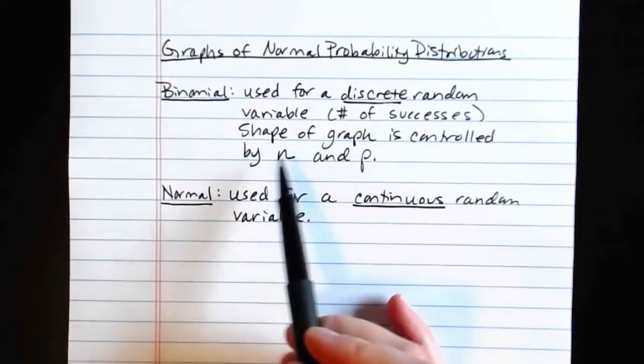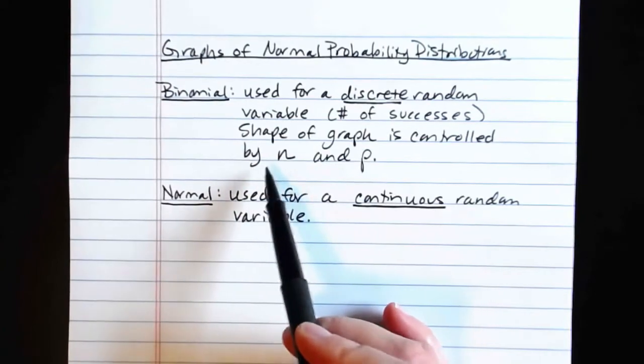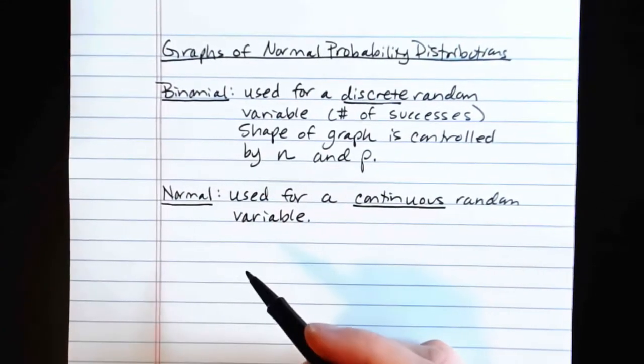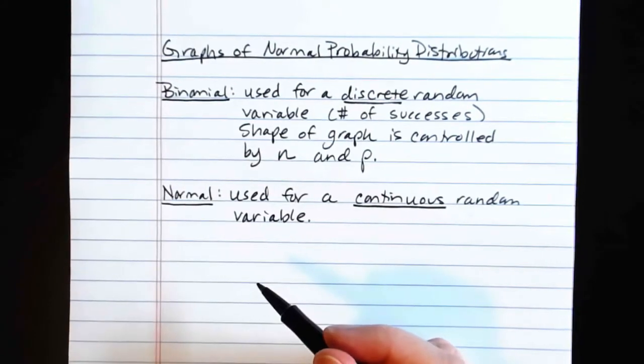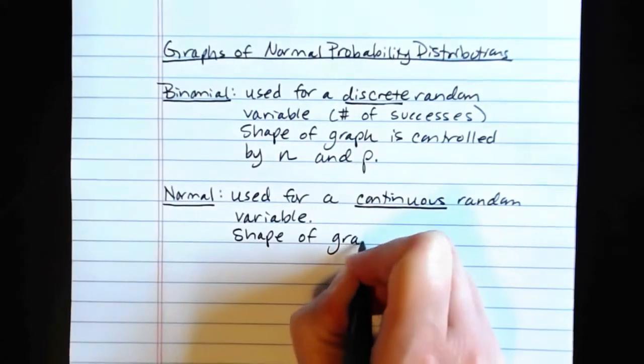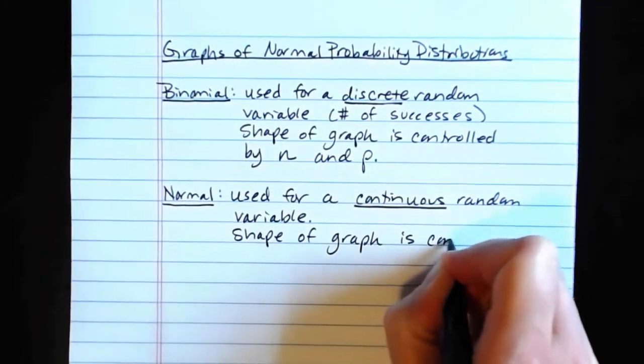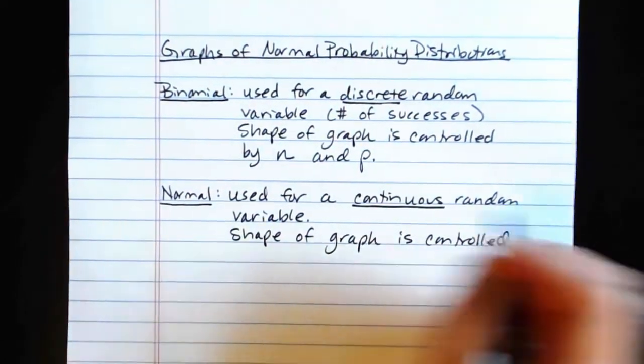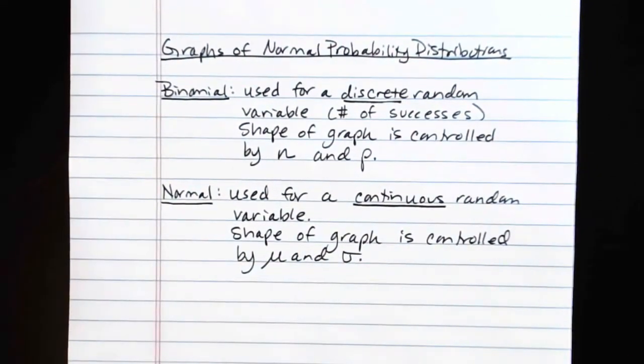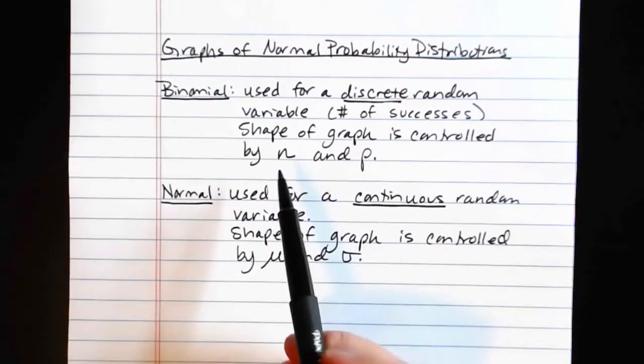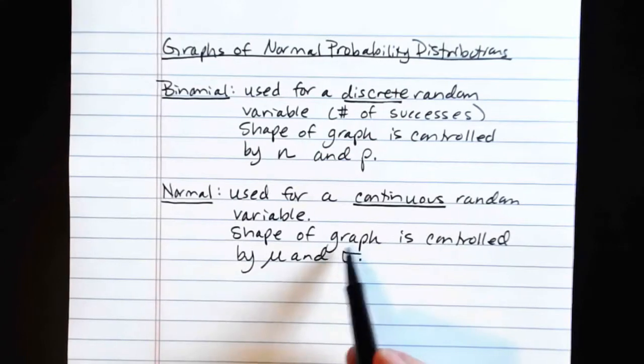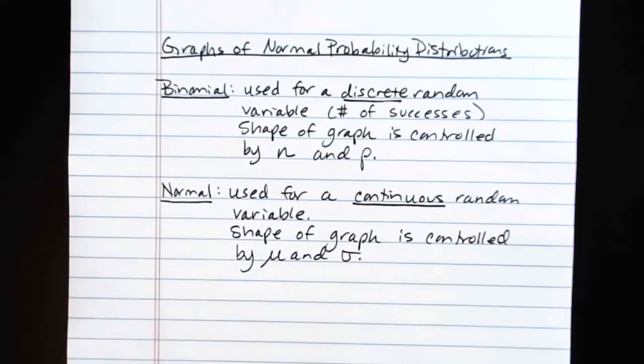Where the shape of the graph in the binomial is controlled by two values n and p, two parameters there, for the normal, the shape of the graph is controlled by mu and sigma. So a little bit of a difference in parameters there. N and p for the binomial, mu and sigma, the population mean and the population standard deviation for the normal.